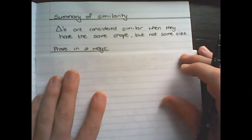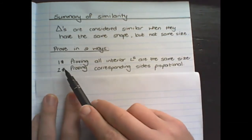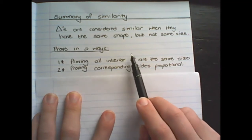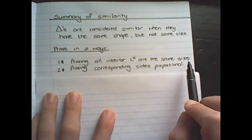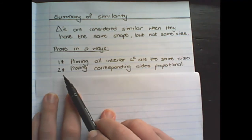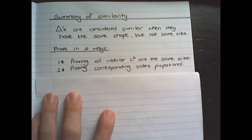And we can prove similarity in two ways. The first way is by proving that all interior angles of the triangle are equal, the same size. And the second way to prove similarity is by proving corresponding sides are proportional. And Mr. Mdluli explained how to do this methodically.